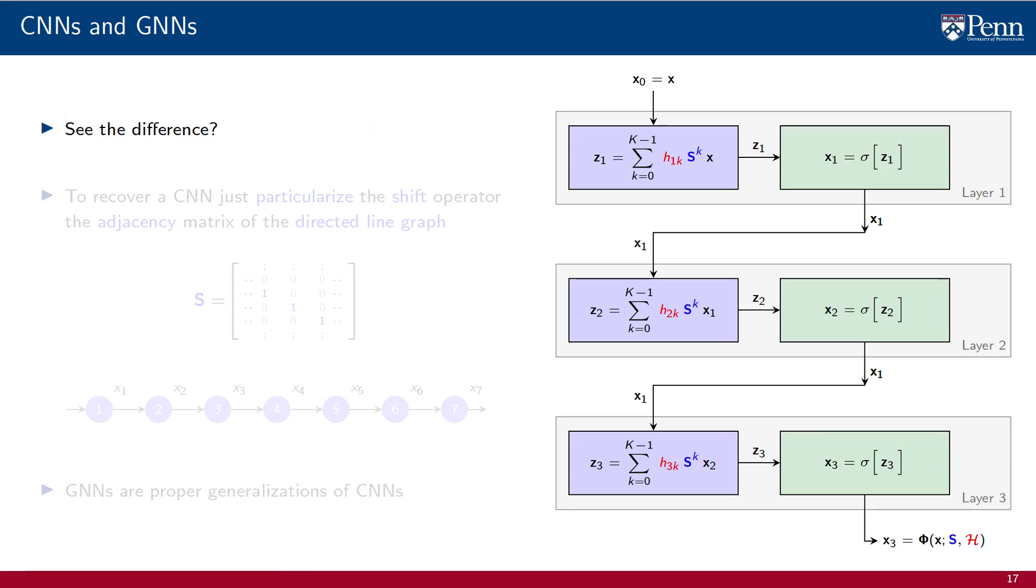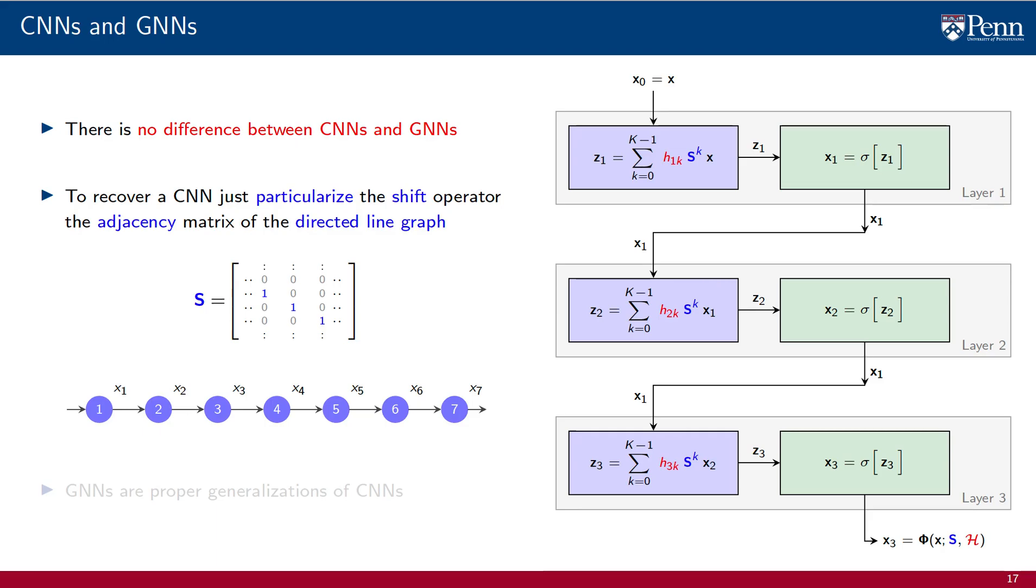See the difference? Let's repeat that. This is a diagram illustrating a graph neural network. And this is a diagram illustrating a convolutional neural network. If you see no difference between the two, it is because there is no difference between a CNN and a GNN.